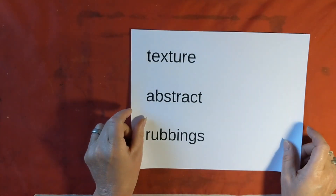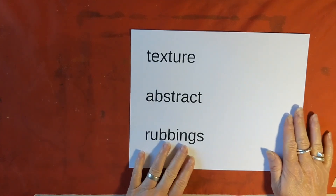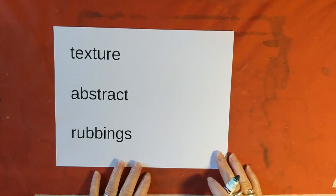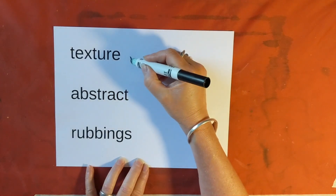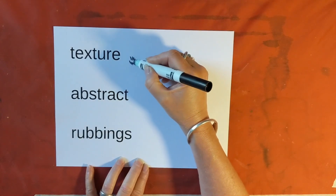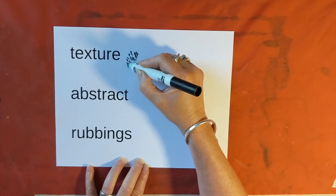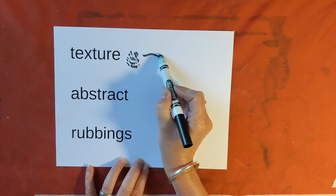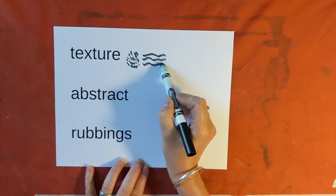So the words we're going to use today are texture, abstract and rubbing. Texture talks about what something feels like - whether it's smooth or bumpy or prickly or furry. You can show that within your drawing, maybe using lines to make something look furry or prickly, or lines to make it look bumpy. There are lots of different ways you can actually show a texture.